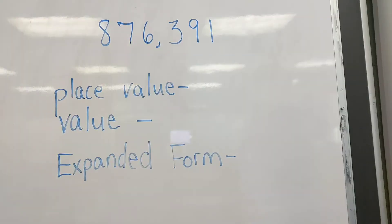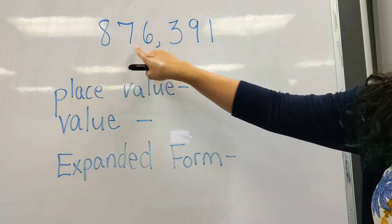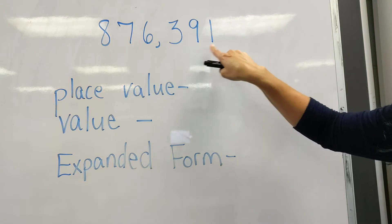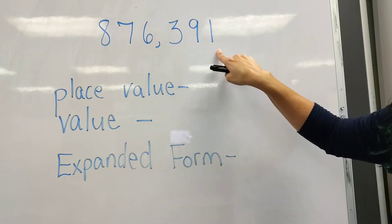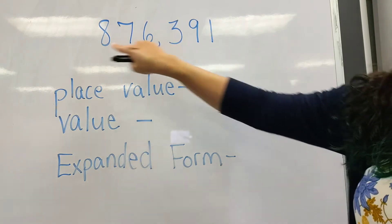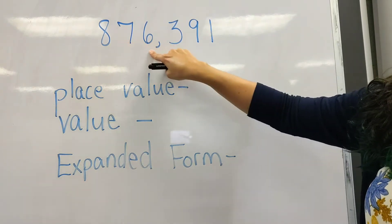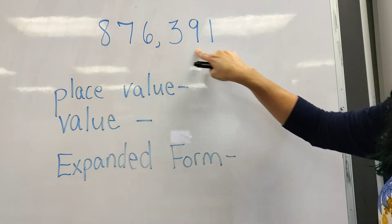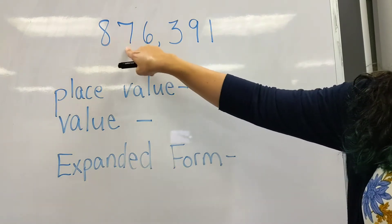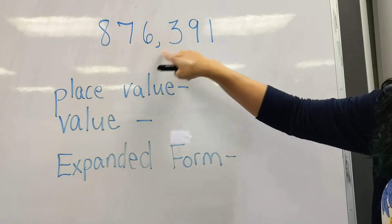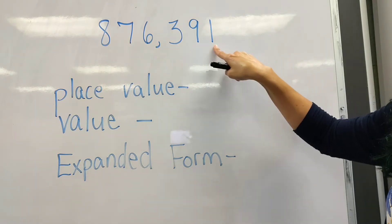Okay, a quick review. This number is eight hundred seventy-six thousand three hundred ninety-one. Remember when you read a hundred thousands number, you read this part together, then you say thousand, then you read this part. Eight hundred seventy-six thousand three hundred ninety-one.